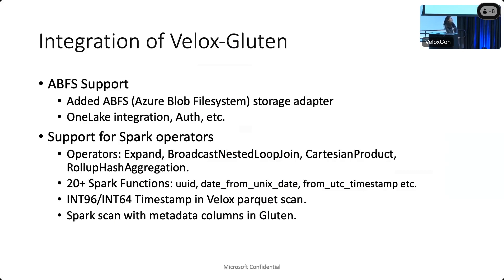Some of the operators we added include expand, broadcast nested loop join, Cartesian product, and roll-up hash aggregate. For expand, we collaborated with Intel to get it into Velox OSS. Broadcast nested loop join and Cartesian product were giving heavy penalty for row-to-column and column-to-row conversions when falling back to Spark. Roll-up hash aggregate cuts down intermediate data and shuffle, and we implemented this in both Gluten and Velox.